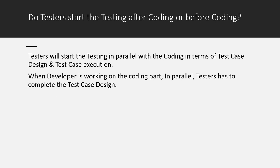An important interview question: do testers start testing after coding or before coding? In the SDLC process, when the coding phase starts, in parallel the test engineer starts designing the test cases. Once the test engineer receives the build from the developer side, the test case design must be ready so they can start testing right away. So both coding and test case design work in parallel — test case execution also works in parallel with coding once builds are received.